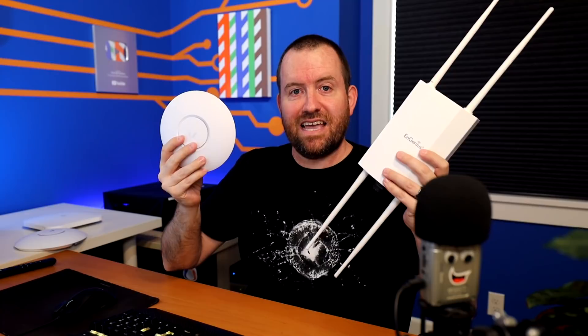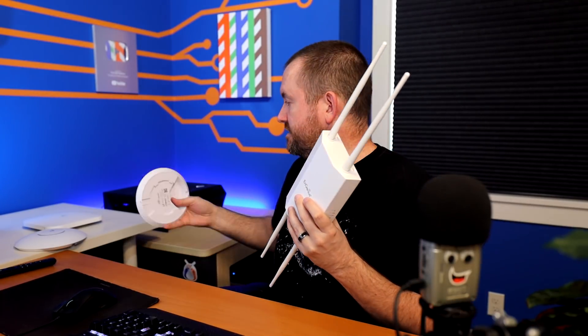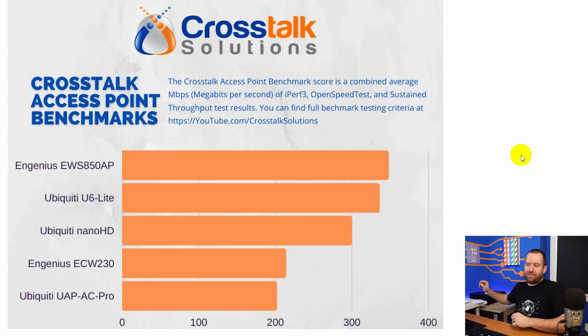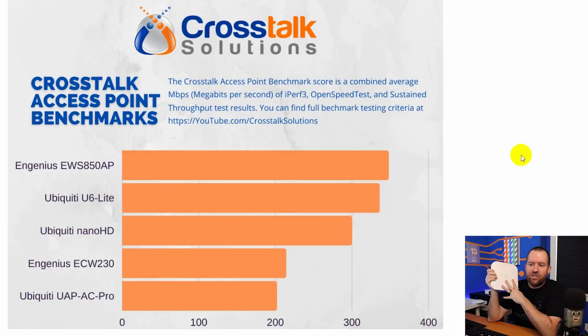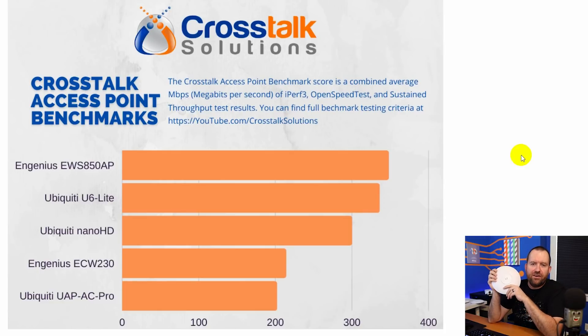Keep in mind: $329 versus $99 — they're close enough in testing to be almost exactly the same, but the EWS850AP is about three times more expensive. Next up, coming in at exactly 300 megabits per second was the Ubiquiti Nano HD, the 4x4 multi-user MIMO Wi-Fi 5 access point. In fourth place with a combined 214 megabits per second was the Ingenious ECW230. And finally, at the bottom of the pack with 202 megabits per second, we have the Ubiquiti UAP-AC Pro.